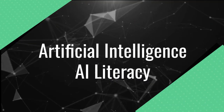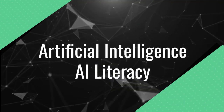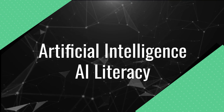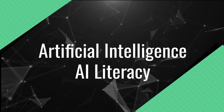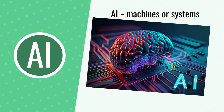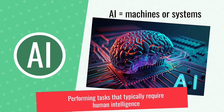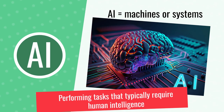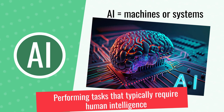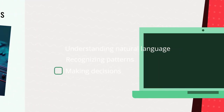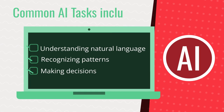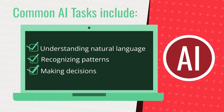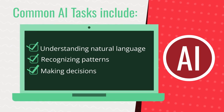Artificial intelligence, often abbreviated as AI, is a field of computer science that focuses on creating machines or systems capable of performing tasks that typically require human intelligence. These tasks can range from understanding natural language to recognizing patterns and making decisions.